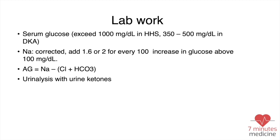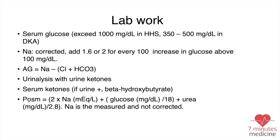Urine analysis should be done to check for ketones, along with serum ketones and plasma osmolality, which is calculated as: 2 × sodium + (glucose ÷ 18) + (urea ÷ 2.8), when using mg/dL. The sodium used here is the measured sodium, not the corrected — this is very important.